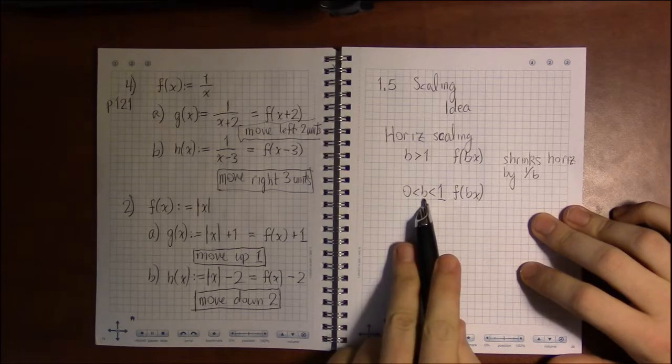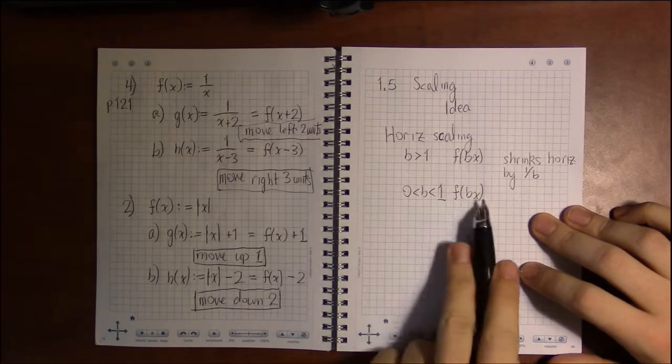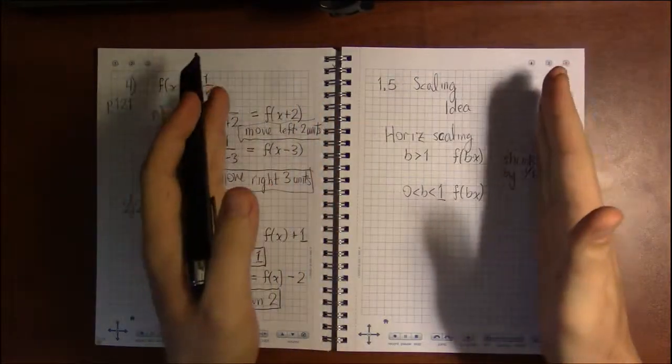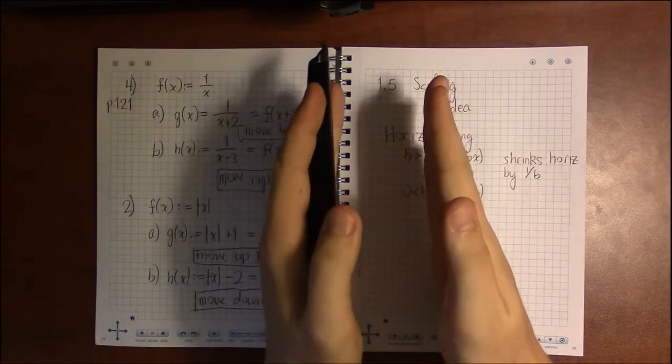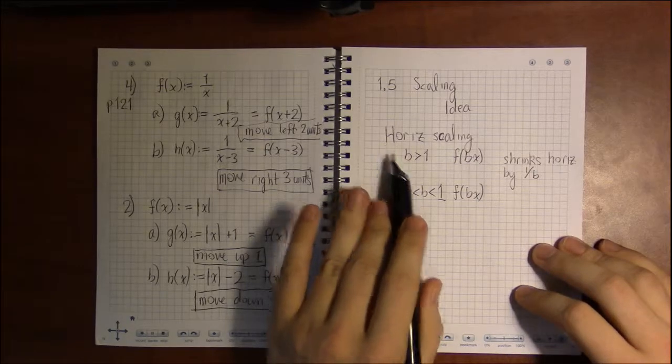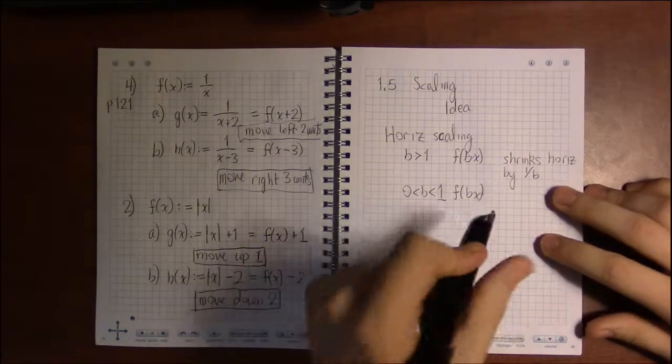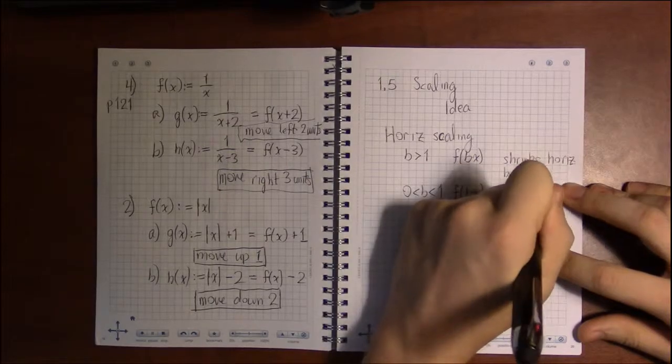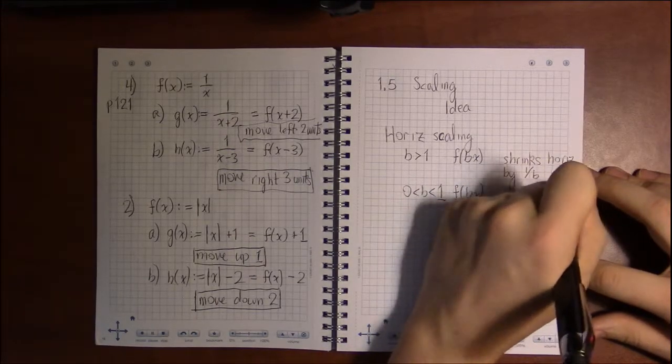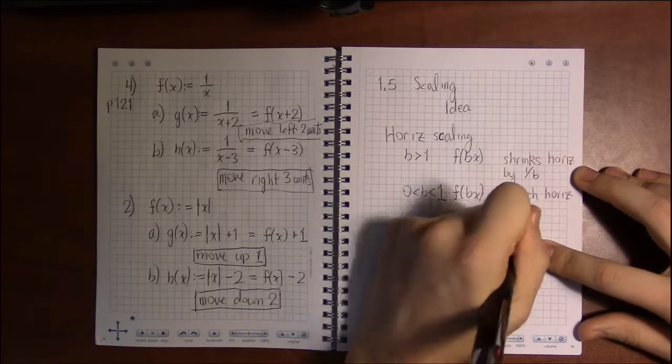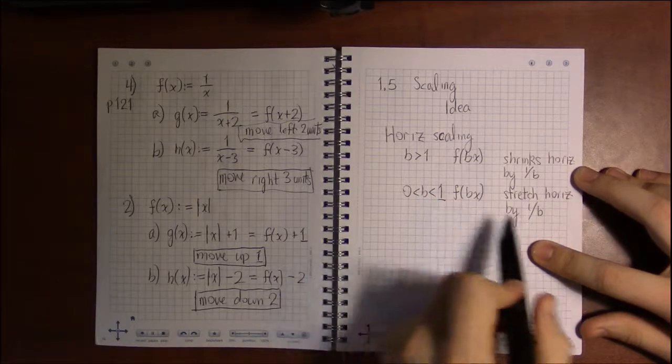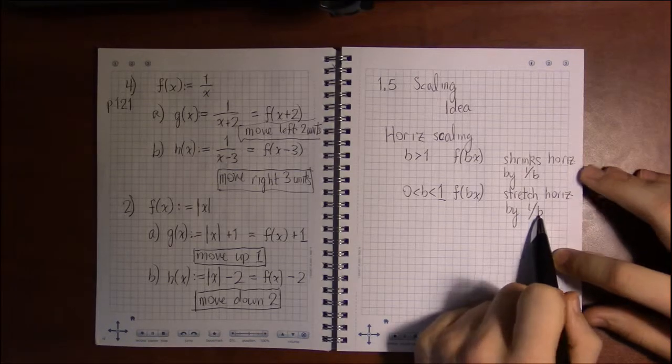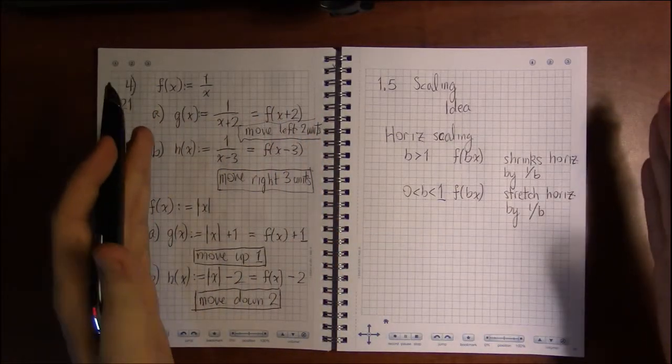But in this case, if b was like a half, a half times x, you would think that would cut the width of the graph or scale it down by 1 half. Nope, horizontal is backwards. So rather than shrink the graph, it's going to stretch the graph horizontally by a factor of, again, 1 over b. So if this is a half, it's going to stretch by 2. 1 over a half is 2. So it'll double the width of the graph.